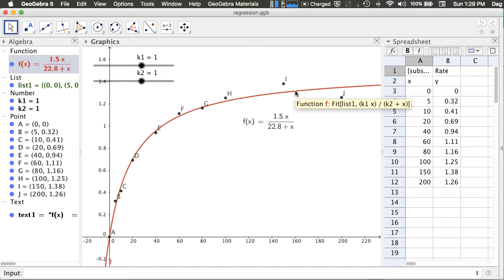You can drag this function from the algebra panel to the graphics panel. In the background, GeoGebra used least square fitting, which minimizes the error between the observed data and the model in order to find the best parameters k1 and k2.